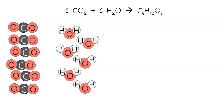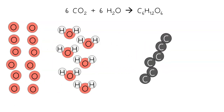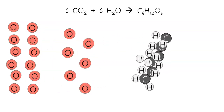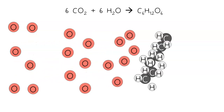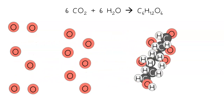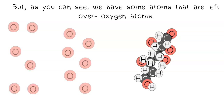This is because one molecule of glucose contains six carbon atoms, 12 hydrogen atoms, and six oxygen atoms. But as you can see, we have some atoms that are left over — oxygen atoms.